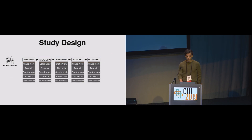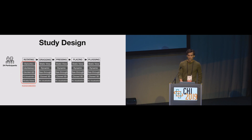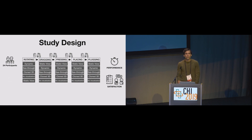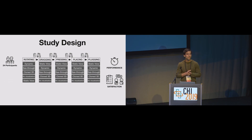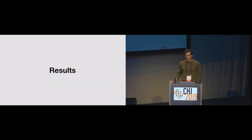In each task, participants used all four views. We added a control condition — a fifth condition with no augmented reality help. The order of views was also randomized. We measured performance and user satisfaction. Performance metrics included task duration, time to start of manipulation, and error rates. For user satisfaction, participants rated the views after each task and also answered open-ended questions about their preferences. I'll now share some of the performance results, overall ratings, and points from the thematic analysis of the open-ended questions.